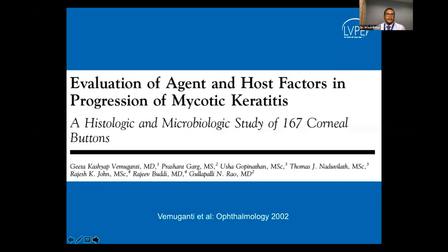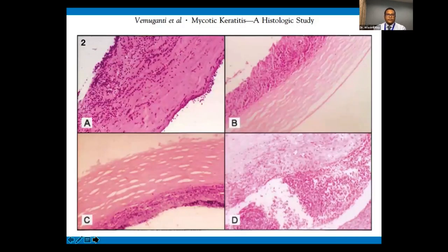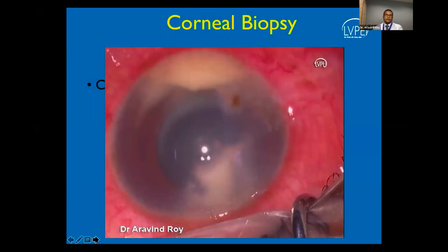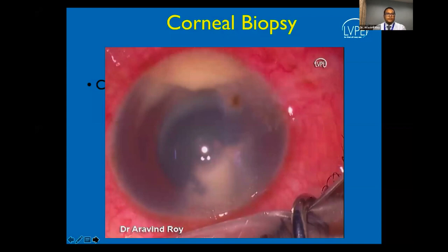An in-house study evaluated 167 corneal buttons of fungal keratitis. Patients with heavy fungal load or poor medical response underwent therapeutic penetrating keratoplasty. Histopathology showed fungal hyphae in the deeper stroma, also noted to cross Descemet's membrane into the anterior chamber. Therefore, it is important to completely bare Descemet's membrane before lamellar surgery, and if a full-thickness infiltrate is suspected, full-thickness procedures rather than lamellar procedures should be performed to minimize recurrence.